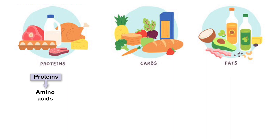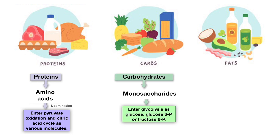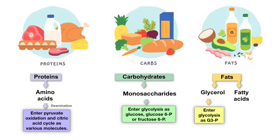To summarize: proteins are broken down into different amino acids and after deamination enter pyruvate oxidation and the citric acid cycle as various molecules depending on the amino acid R groups involved. Carbohydrates are either monosaccharides or are broken down into monosaccharides that enter glycolysis as either glucose, glucose-6-phosphate, or fructose-6-phosphate depending on the sugar. Fats or triglycerides are broken down into glycerol and fatty acids; the glycerol enters glycolysis as glycerol-3-phosphate while the fatty acids are broken down by beta oxidation into several molecules of acetyl-CoA that then enter the citric acid cycle.